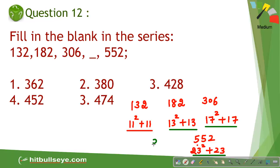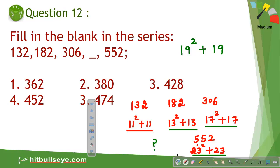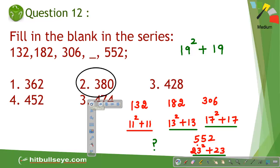Looking at the pattern: 11, 13, 17, 23 — these are prime numbers. The next prime number is 19. So the missing term is 19 squared plus 19. 19 squared is 361, plus 19 gives 380 as the answer.